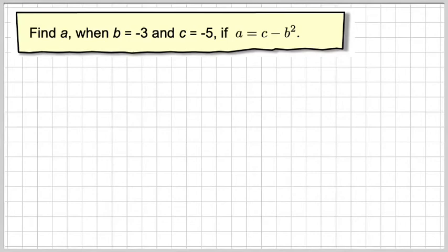In this video we're going to do a little bit of substitutions. It says find a when b is minus 3 and c is minus 5 if a is equal to c minus b squared.